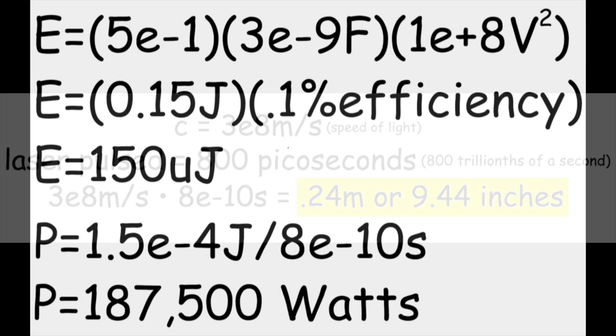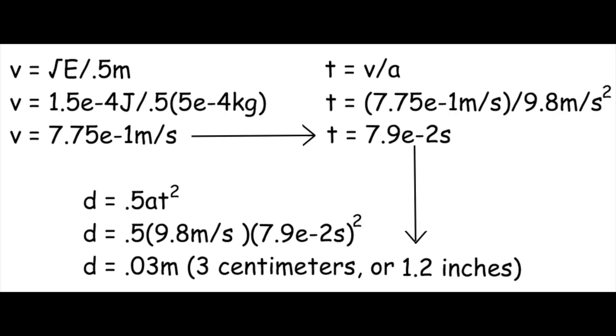A small TEA nitrogen laser with capacitors totaling 3 nF, charged to 10 kilovolts, will only produce a laser pulse of 150 microjoules, assuming a typical nitrogen laser efficiency of one-tenth of one percent. This is identical to the kinetic energy of a paper clip being dropped from a height of just over one inch, or three centimeters.